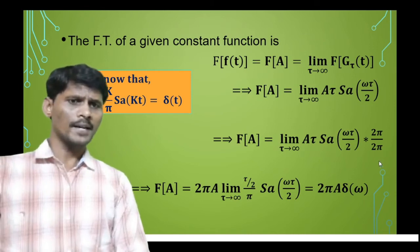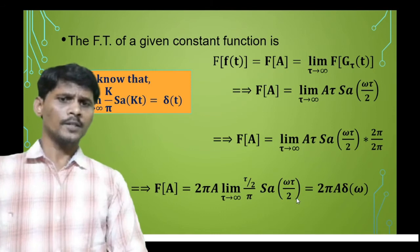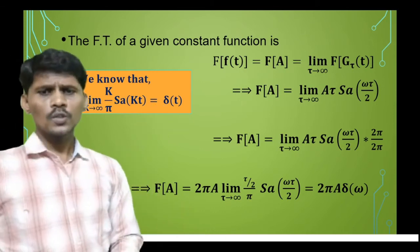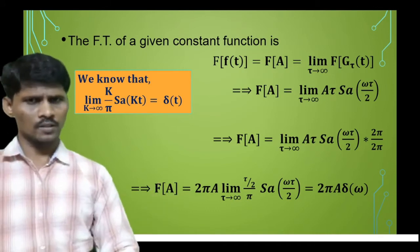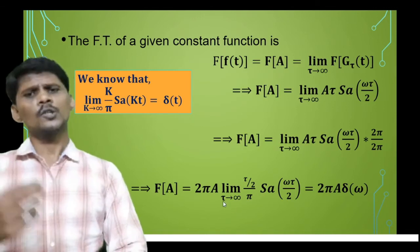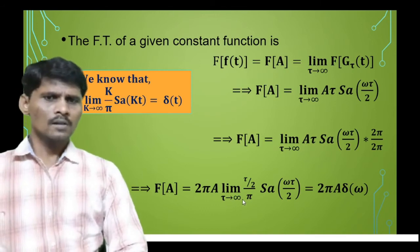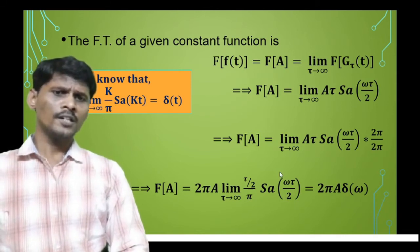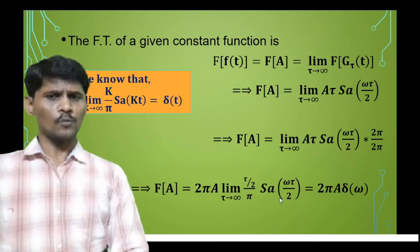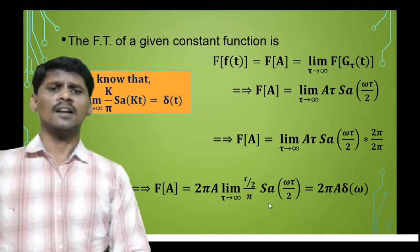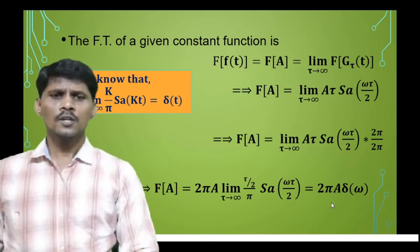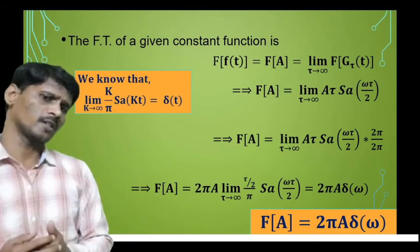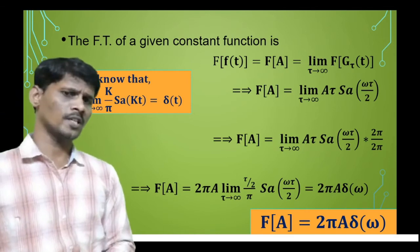This gives us the expression (τ/2)/π times sinc(ωτ/2), where k equals τ/2. As τ→∞, τ/2 also tends to infinity. So the limit as τ→∞ of (τ/2)/π times sinc(ωτ/2) gives δ(ω), applying the sampling sinc identity. With t equal to ω, we get 2πa·δ(ω). Therefore, the Fourier transform of a constant function is 2πa·δ(ω). This is a very important expression — keep it in mind.